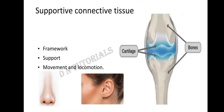Together bones and cartilage bring about movement and locomotion. Movement means when you stand in one place and move your body parts — there is no change in position. Locomotion means moving from one place to another, i.e., a change in position. For both movement and locomotion, the supportive connective tissue — that is, bone and cartilage — is responsible.